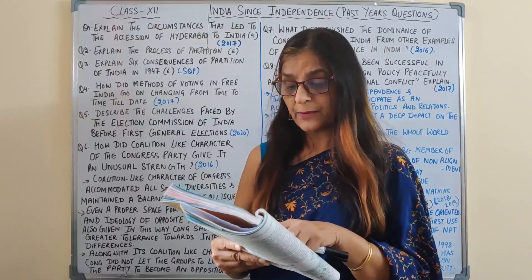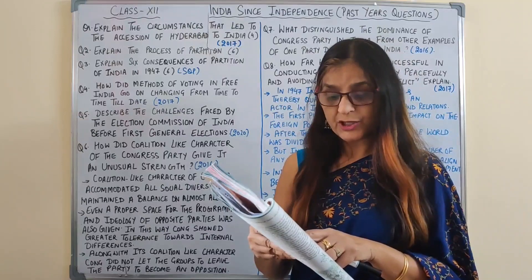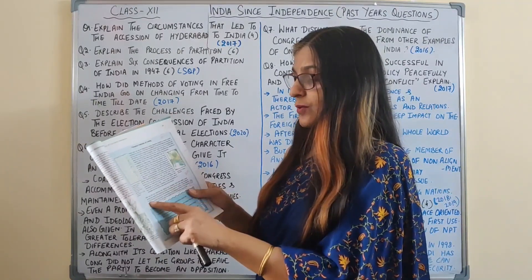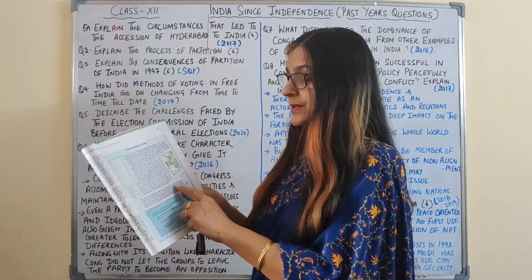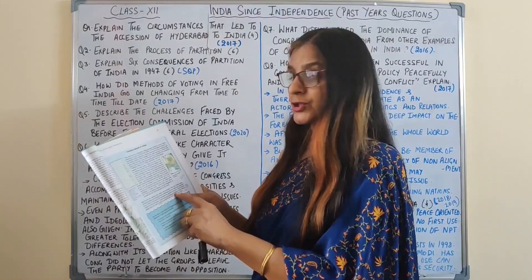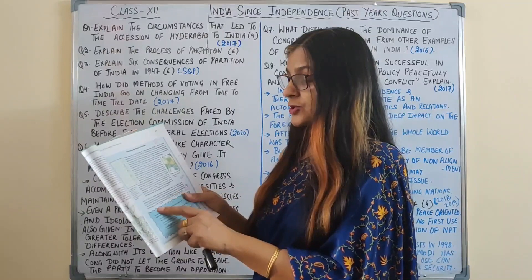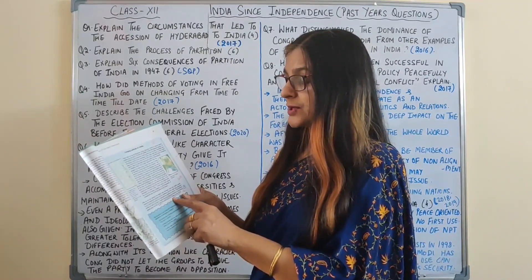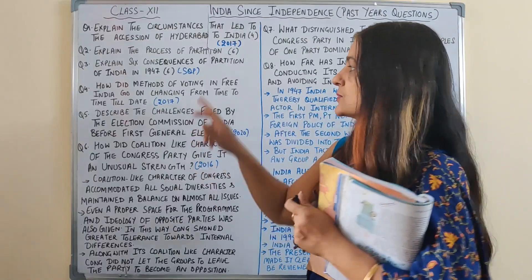After the first two elections, this method was changed. Now the ballot paper carried the names and symbols of all candidates, and the voter was required to put a stamp on the name of the candidate they wanted to vote for. This method worked for nearly 40 years. Towards the end of the 1990s, the Election Commission started using the EVM — Electronic Voting Machine. By 2004, the entire country had shifted to the EVM.